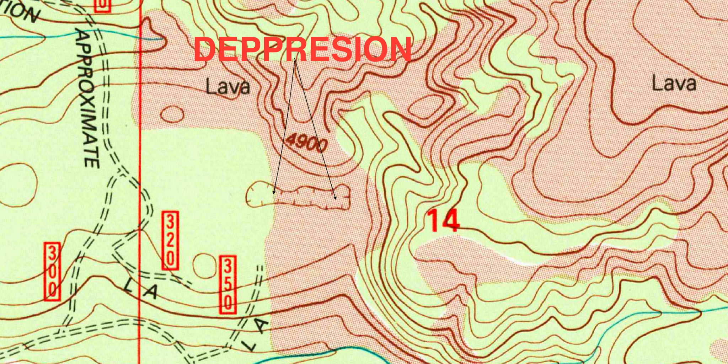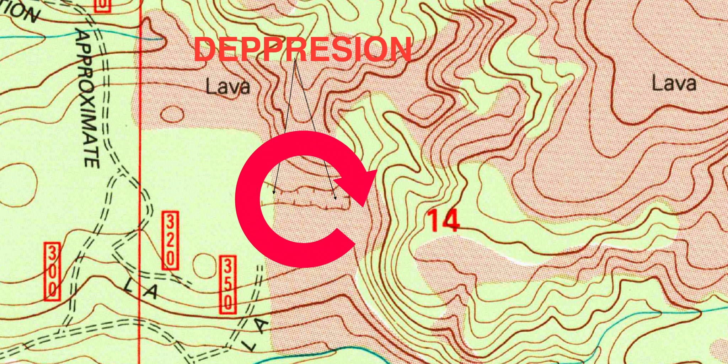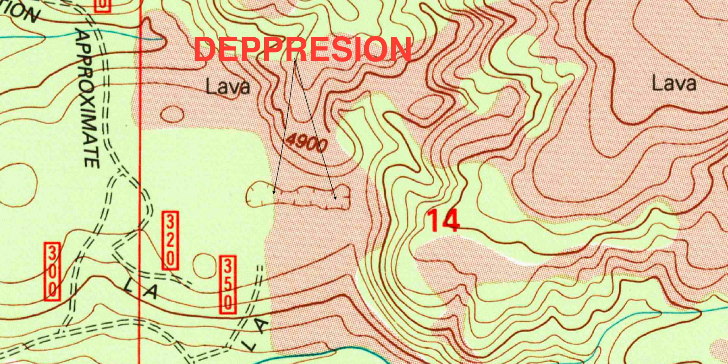The last major terrain feature is going to be a depression. A depression is a low point in the ground or a sinkhole. On the topographical map the arrows point to a depression — it's a closed concentric circle with tick marks on the inside, and those tick marks are pointing to low ground. Unfortunately I don't have a picture of a depression, but it is basically a hole in the ground, a sinkhole, a low point in the ground.